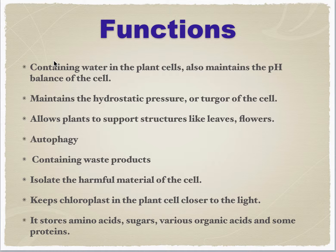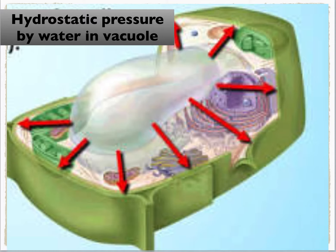Because of the water present inside the vacuole, it applies a turgor pressure — a hydrostatic pressure. You can see the water inside the vacuole applies pressure on the cellular components, and all the components are drawn towards the cell membrane. It also applies a turgor pressure, which is the force applied by the vacuole that pushes the plasma membrane against the cell wall.